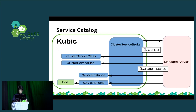Second, use the managed service for a pod. This step has two Kubernetes resources: one is the service instance, which represents the service; two is the service binding, which represents the binding of the pod and service instance. The administrator selects the cluster service class and cluster service plan for the pod and creates a service instance. Then the administrator creates a service binding for the pod. This step creates secrets, which include binding information.